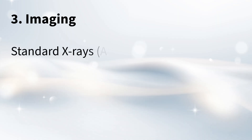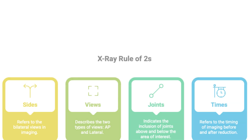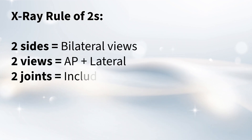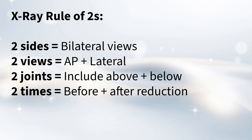X-rays are usually the first line to confirm the diagnosis and see the fracture pattern clearly. The sources mention something called the rule of twos, which is a way to make sure imaging is really comprehensive. It means getting two views — an AP (anterior-posterior) and a lateral view. Often you want two sides — comparing with the uninjured limb. Then two joints — the ones above and below the fracture — to make sure there's nothing else going on. And images are often taken at two times: initially, and again after the fracture's been set following reduction.